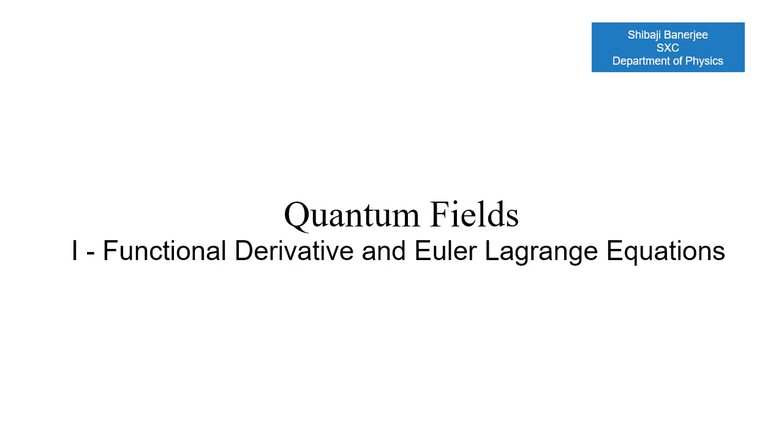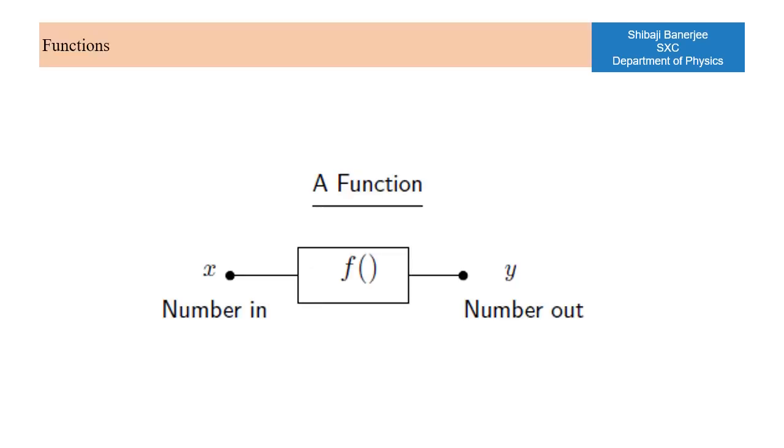In this lecture we would learn how to obtain the Euler-Lagrange equation of motion for classical continuous systems using the methods of functional calculus. Our aim in this lecture is to obtain the form of Euler-Lagrange equations for a continuous system or a field.